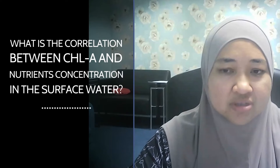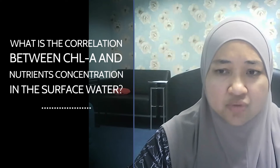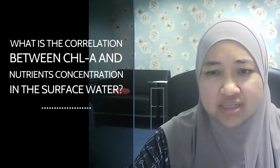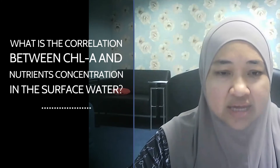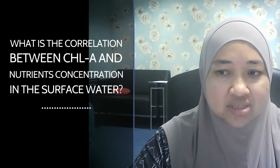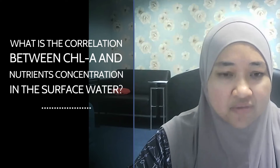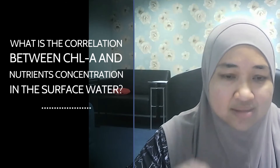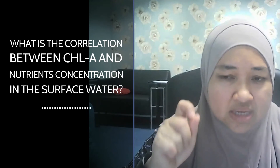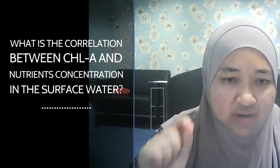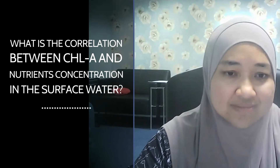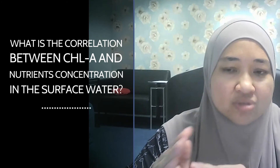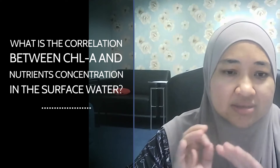Here are two examples of research questions for this type. The first one is: what is the correlation or relationship between chlorophyll A and nutrient concentrations in particular surface water? This research wants to know what the relationship is between chlorophyll A and nutrients in the surface water.